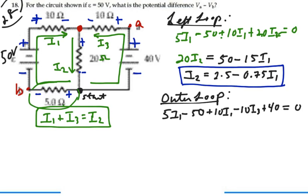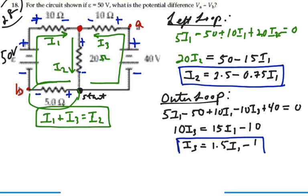And then continuing to the right side of this circuit, I'll have minus 10 I3 plus 40 equals 0. I want to solve this for I3 in terms of I1. So I have 10 I3 is equal to 15 I1 minus 10. I have I3 is equal to 1.5 I1 minus 1. So that is my second equation of merit.